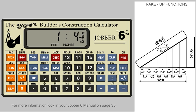Next, we need to activate the Rake Up mode by pressing the Invert key and then the Rake Up key. Now we can get the rise dimension at each point along the base by simply pressing the Plus key. The first one is 10 — the second, the third, the fourth.